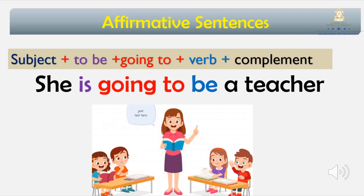What do you need to make a sentence in affirmative form? You are going to need a subject — in this case, it's she. Then you need a verb to be — in this case, it's is. Then going to. Then the verb — in this case, to be. And then the complement, the last part of the sentence — in this case, it's a teacher. She is going to be a teacher. You need: subject, verb to be, going to, verb, and complement.